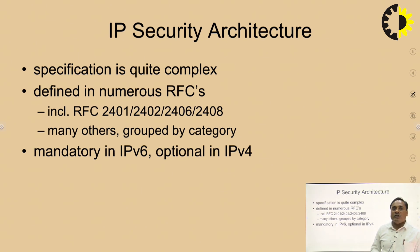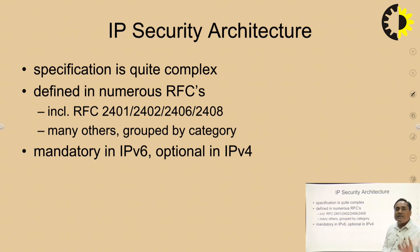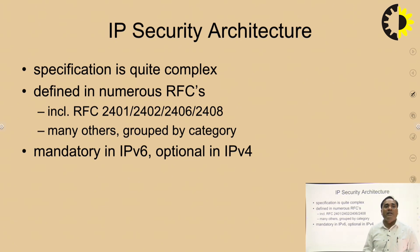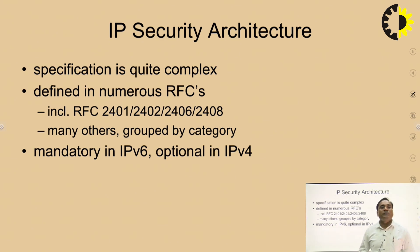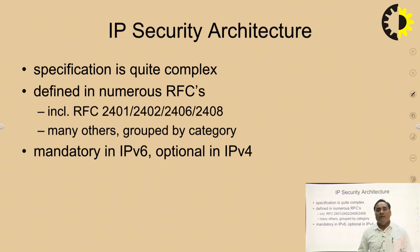The IP security architecture is a complex phenomenon — quite complex for architecture design. It is mandatory for IPv4 and optional for IPv6. IPv6 is a more enhanced version of IPv4, providing more security compared to Internet Protocol version 4. IPv4 is less secure compared to IPv6.